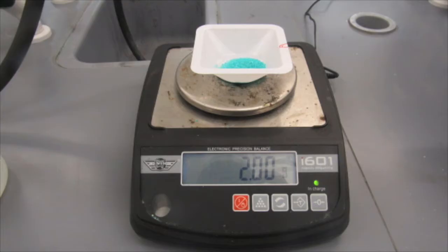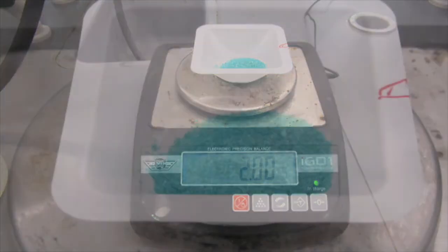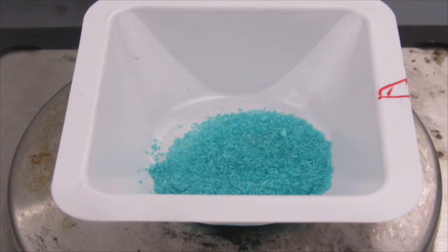Here we start with about 2 grams of copper chloride. As you look closer at the copper chloride, you can see it's a blue, bluish-green, crystalline type substance.